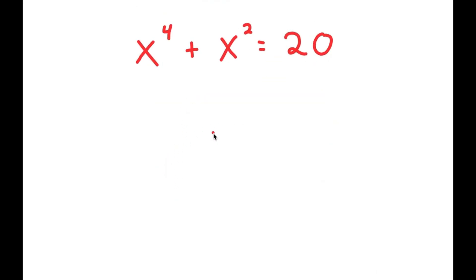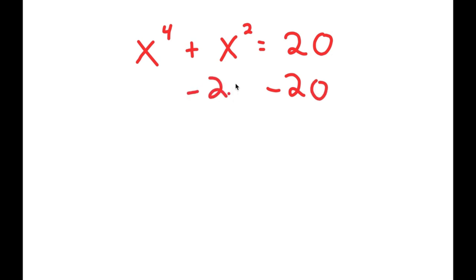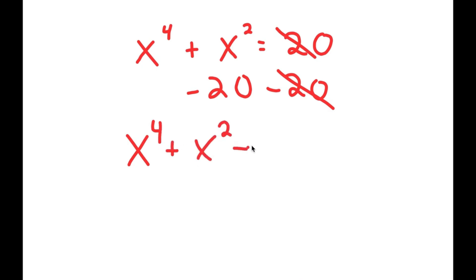In this equation, I have x to the power of 4 plus x squared is equal to 20. To solve this, I'm going to start by subtracting 20 on both sides so we can have all our terms on one side. So I get x to the power of 4 plus x squared minus 20 is equal to 0.